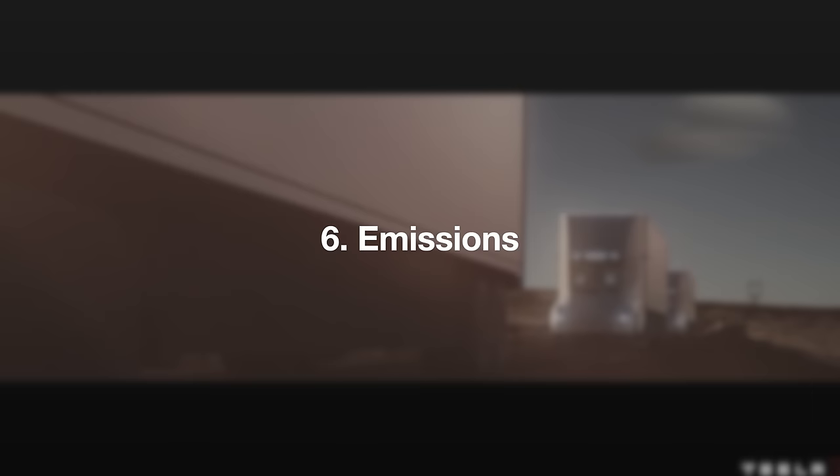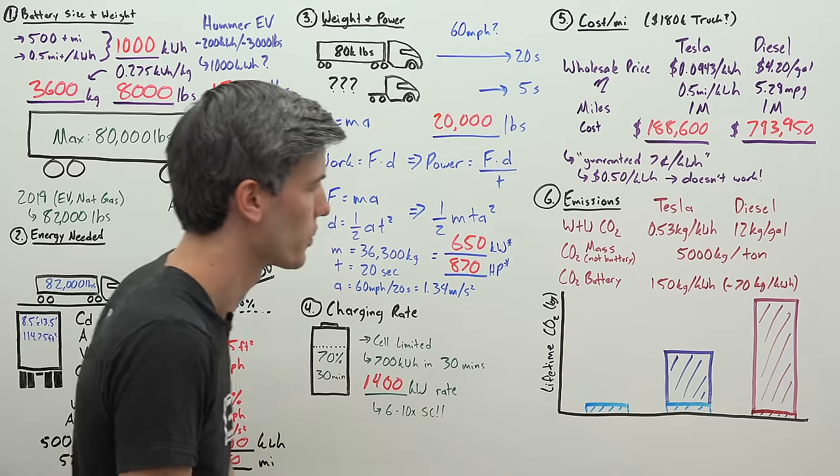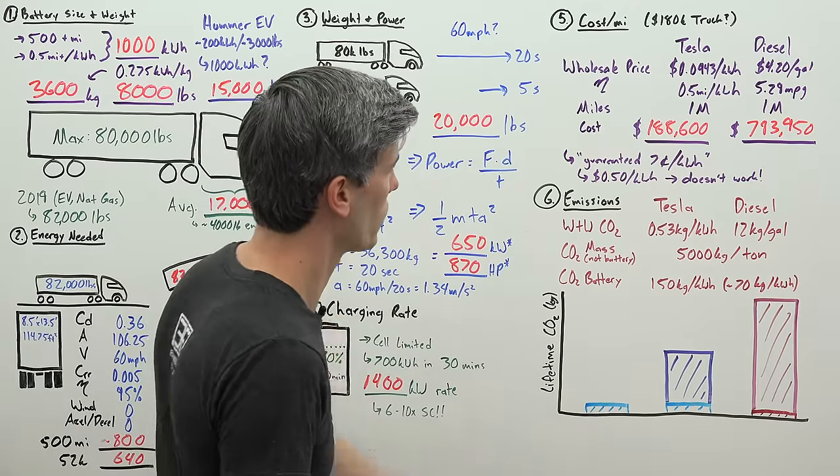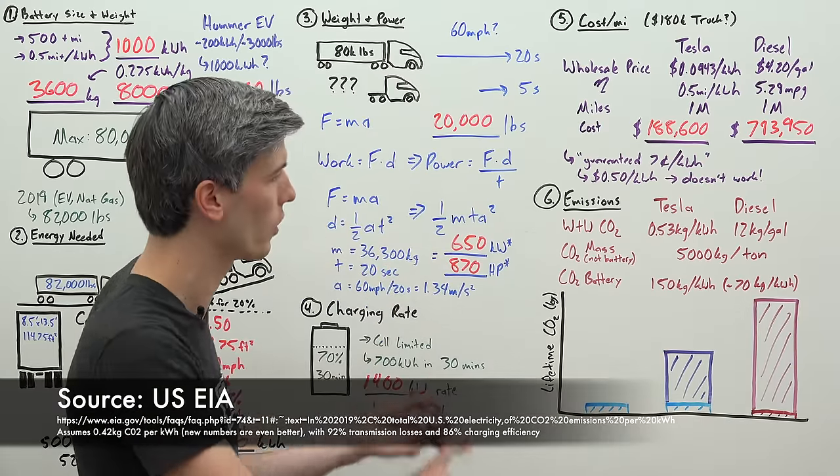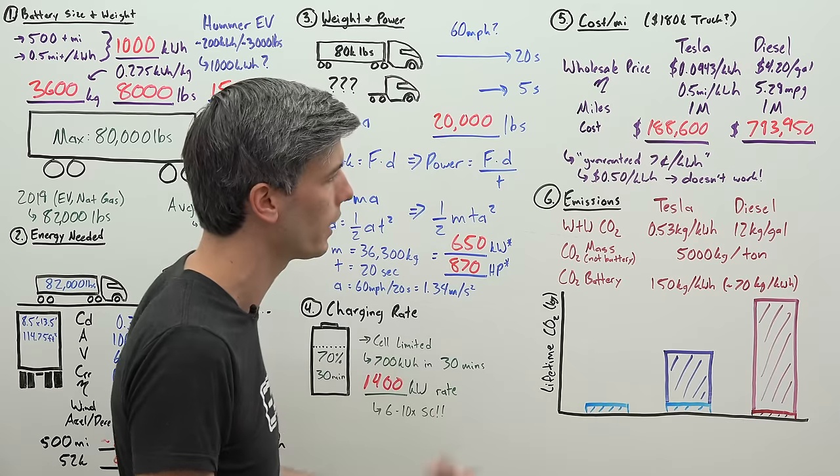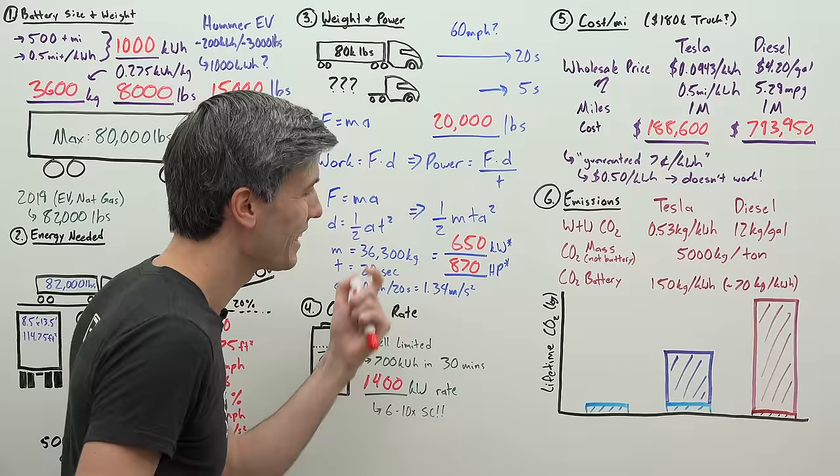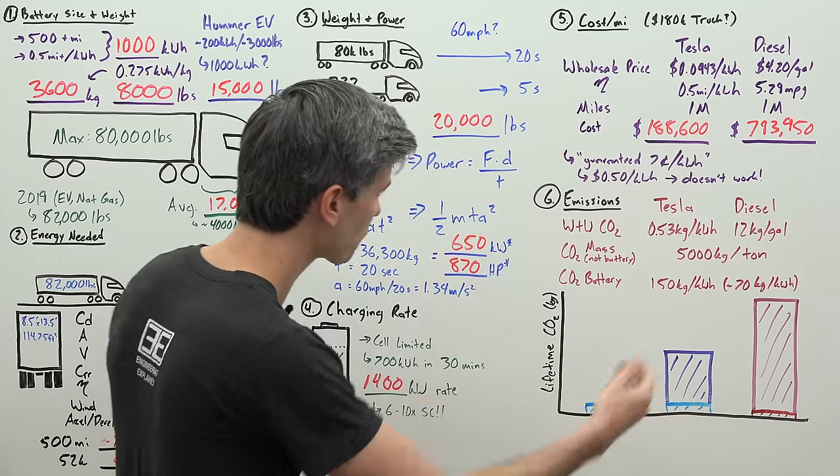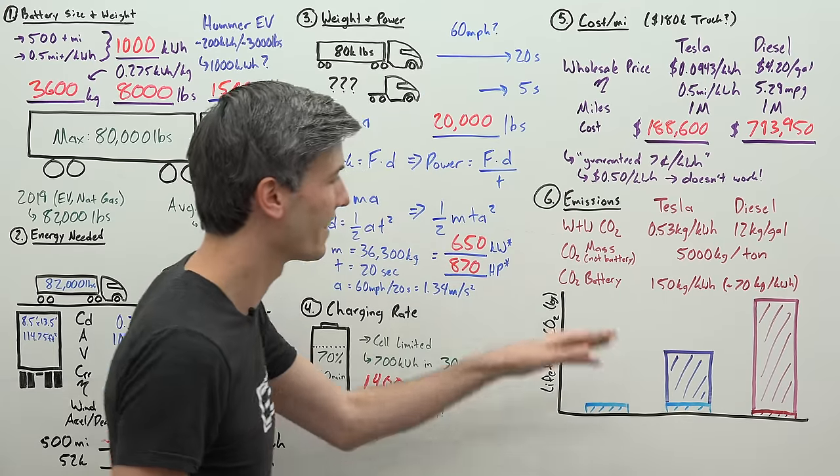Our final subject: do the emissions check out? This is of course what Tesla is pushing for. They're saying by switching from diesel to electric you're going to have far better CO2 emissions. If we look at our well to wheel CO2 emissions, meaning everything required in order to use that certain amount of energy within the vehicle, for the Tesla that is 0.53 kilograms of CO2 per kilowatt hour. That includes transmission losses, charging losses. For diesel, 12 kilograms of CO2 emitted for every gallon of diesel burned. We have 5,000 kilograms of CO2 per ton of vehicle, not including the battery.